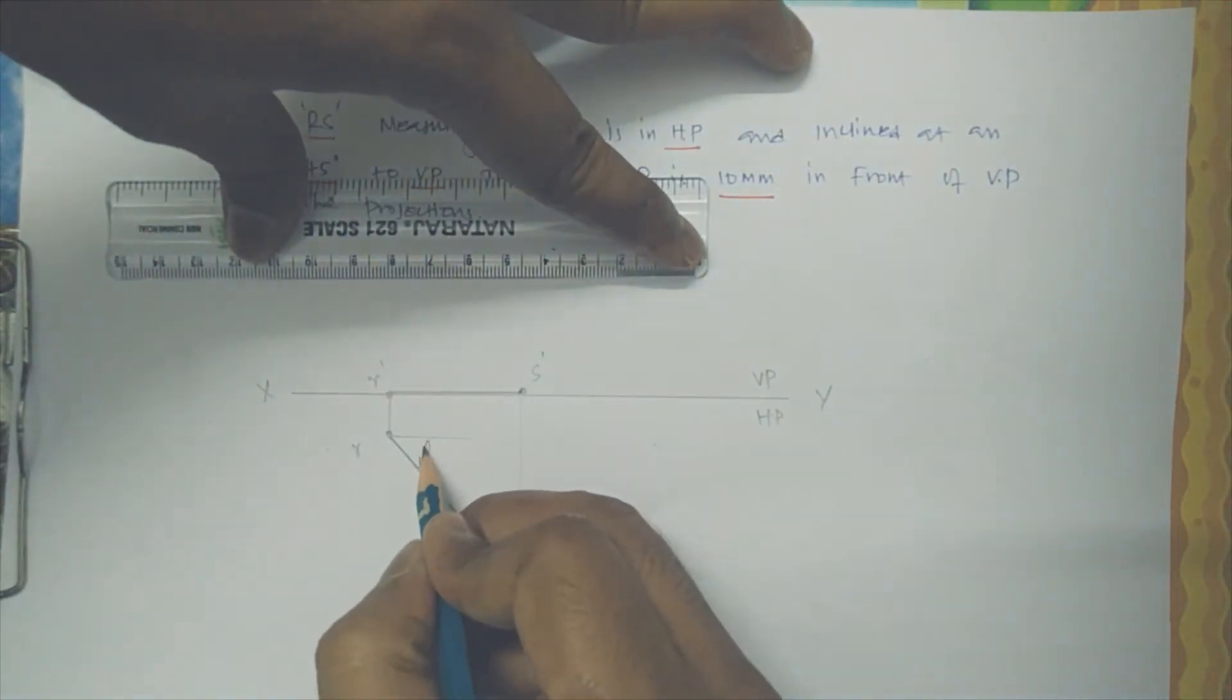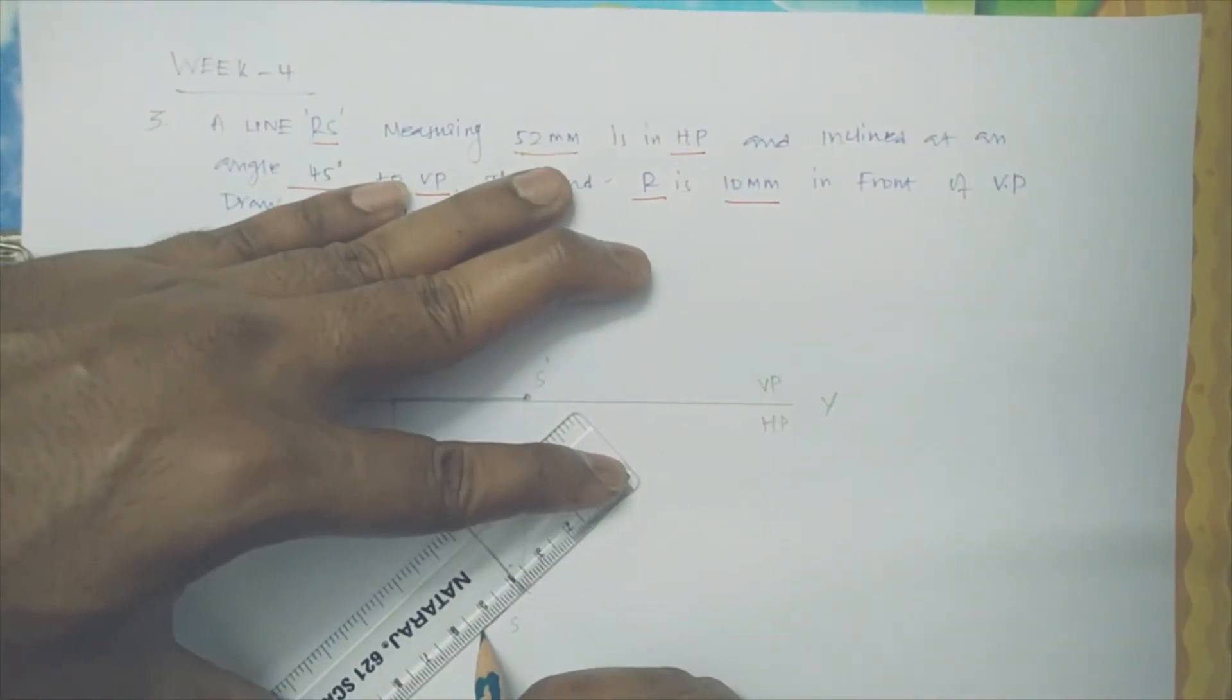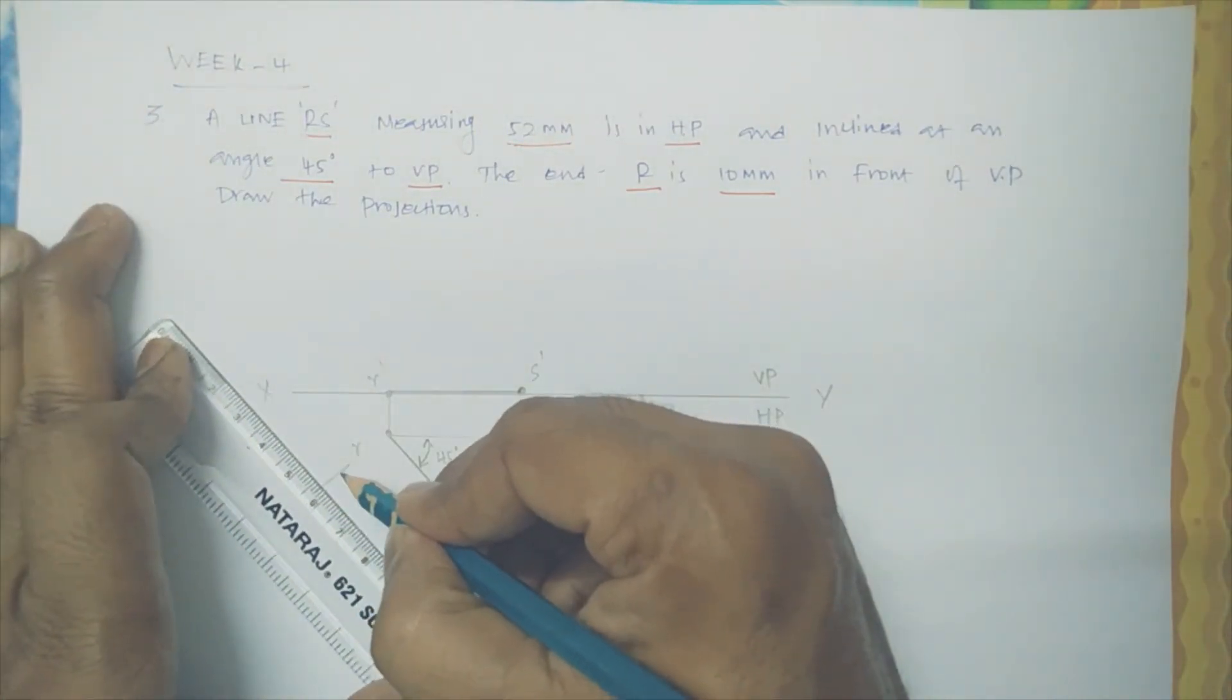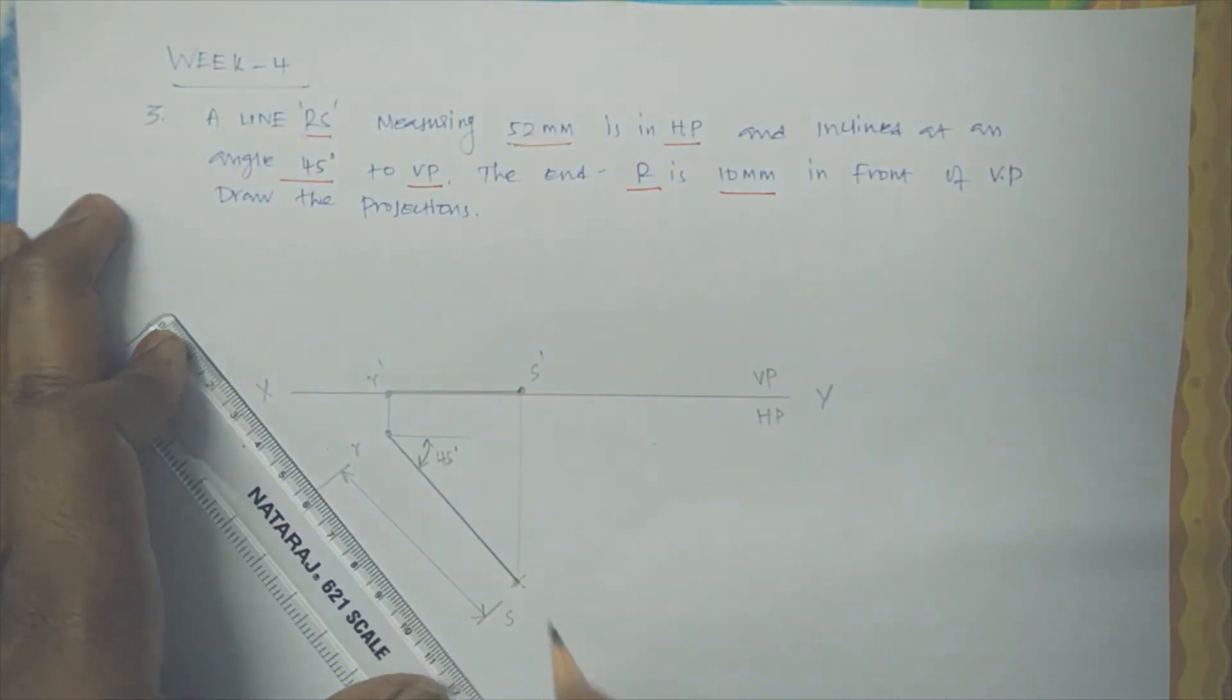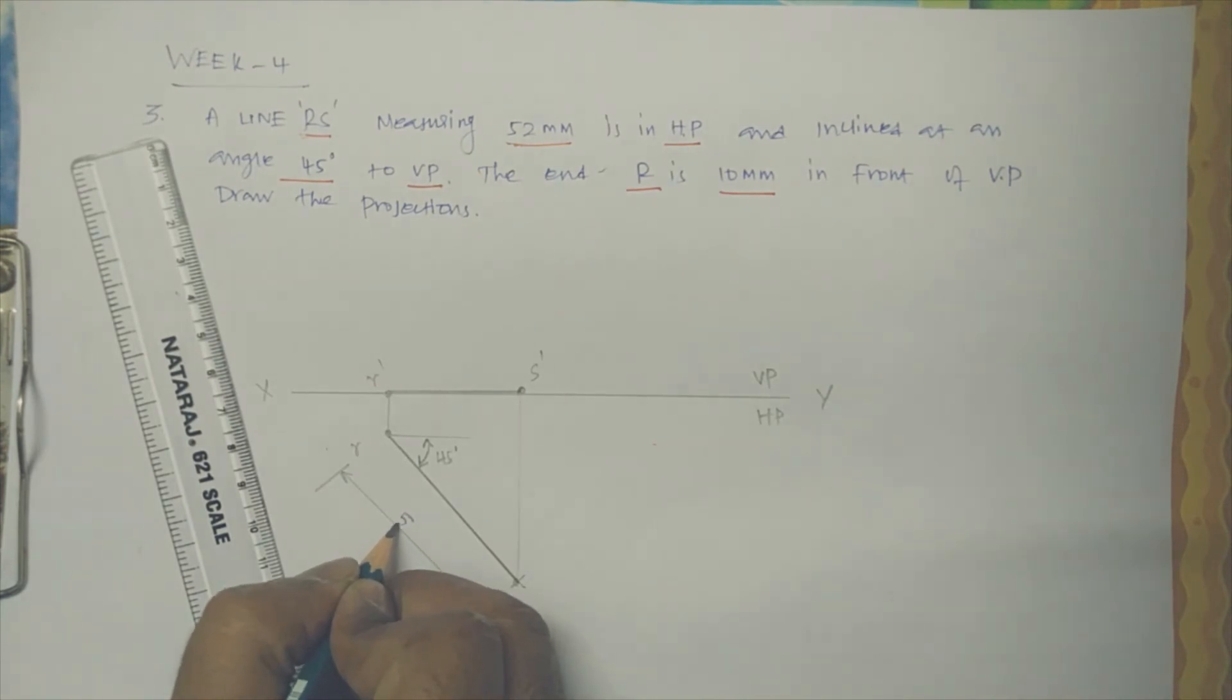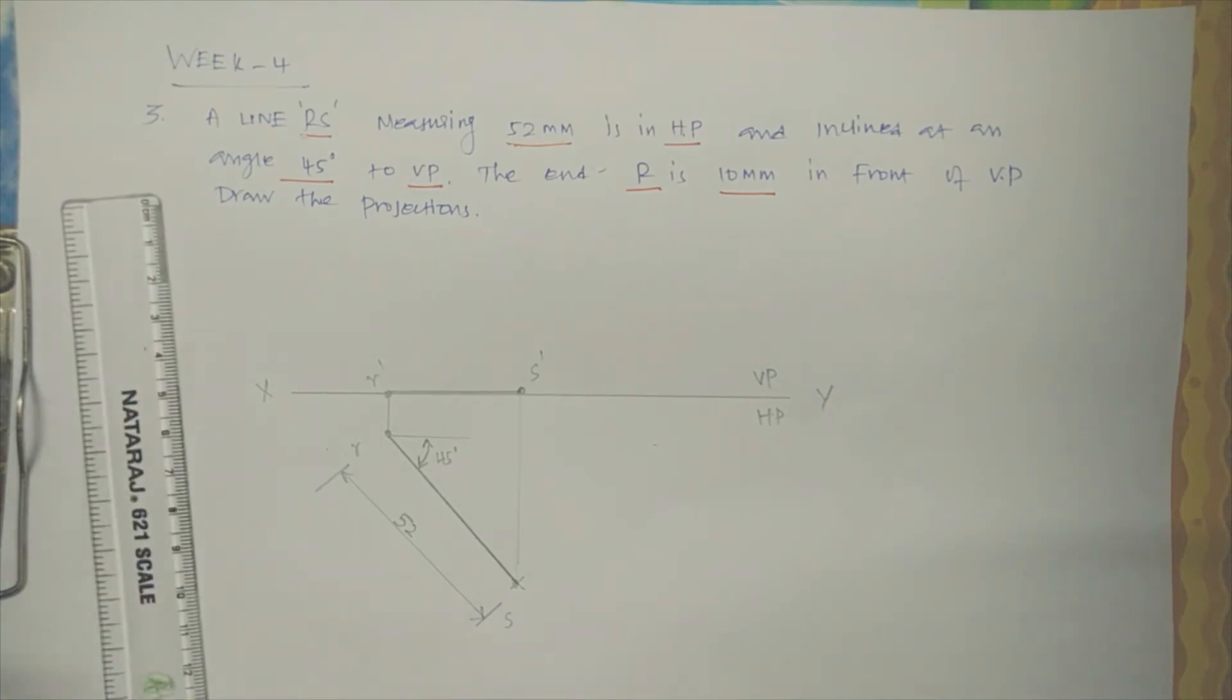We have to write longer. We probably write the dimensions. So finally, the RS line is supposed to be this and this. So here, when you are seeing here, you can see both edges supposed to be parallel.